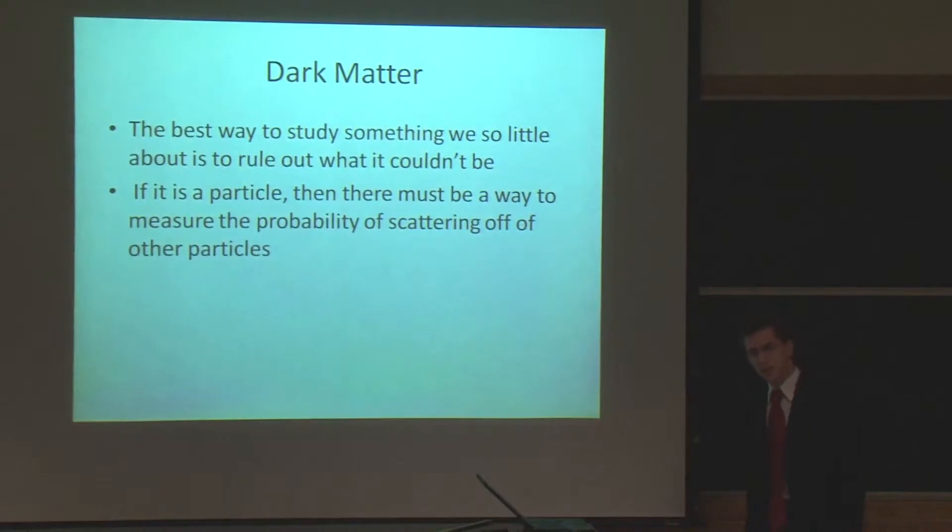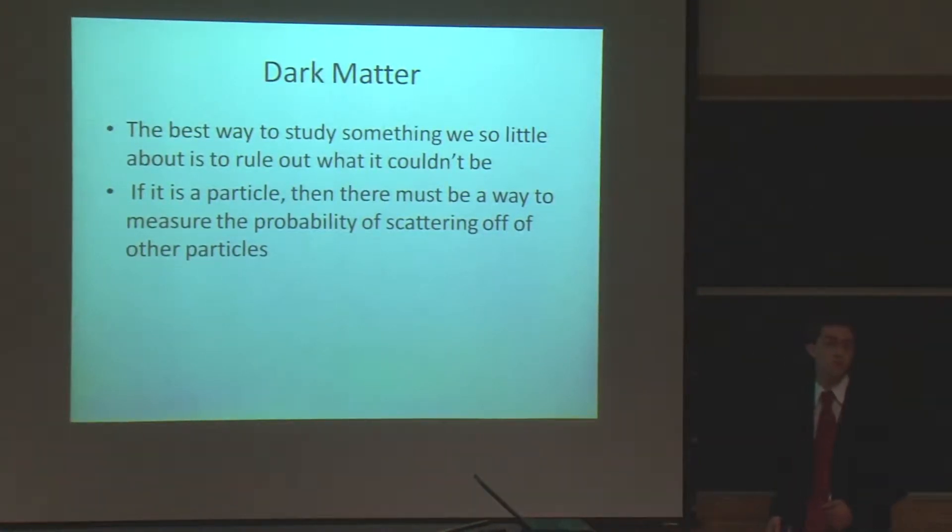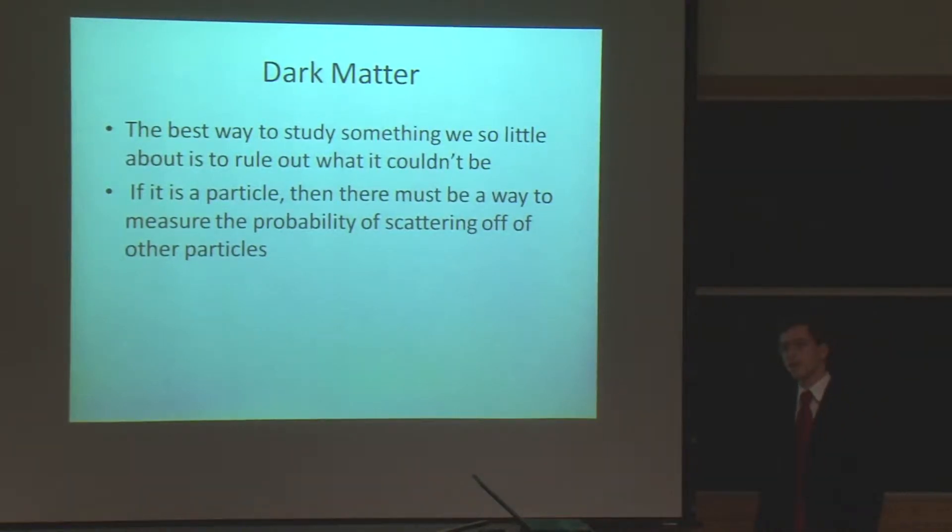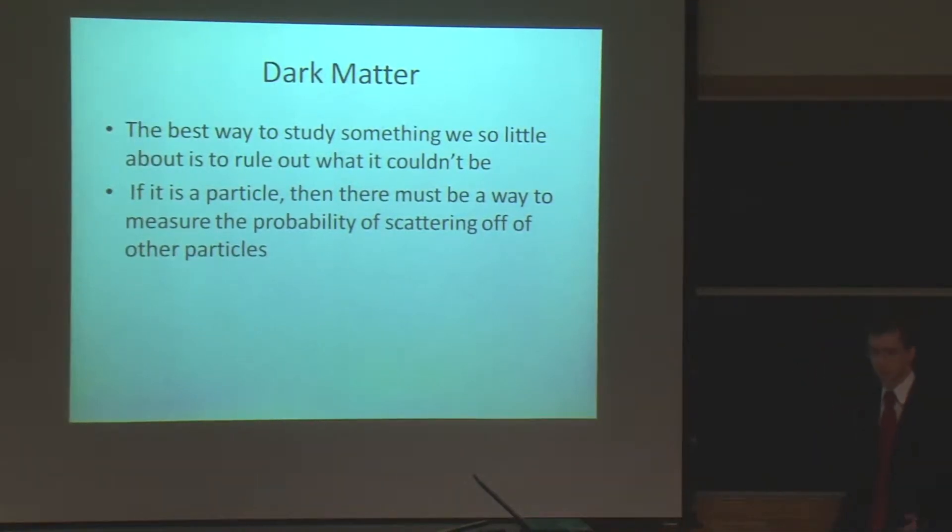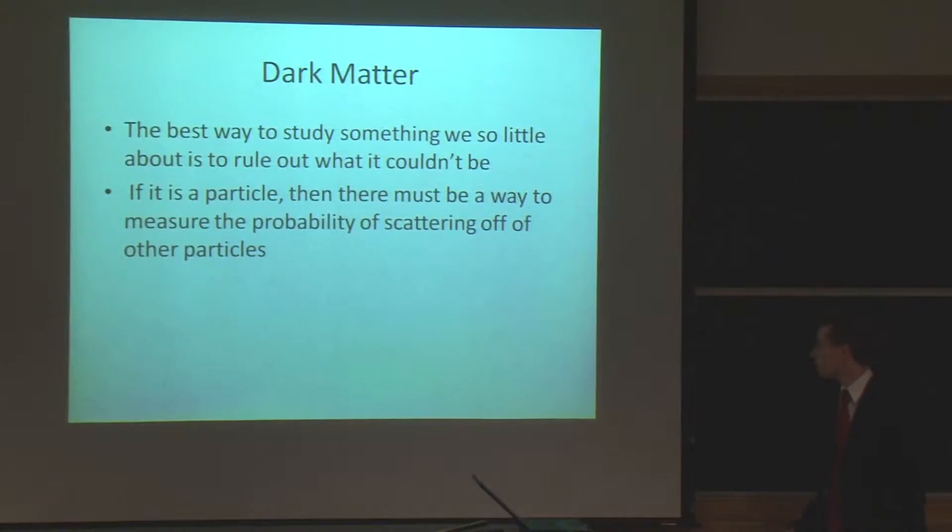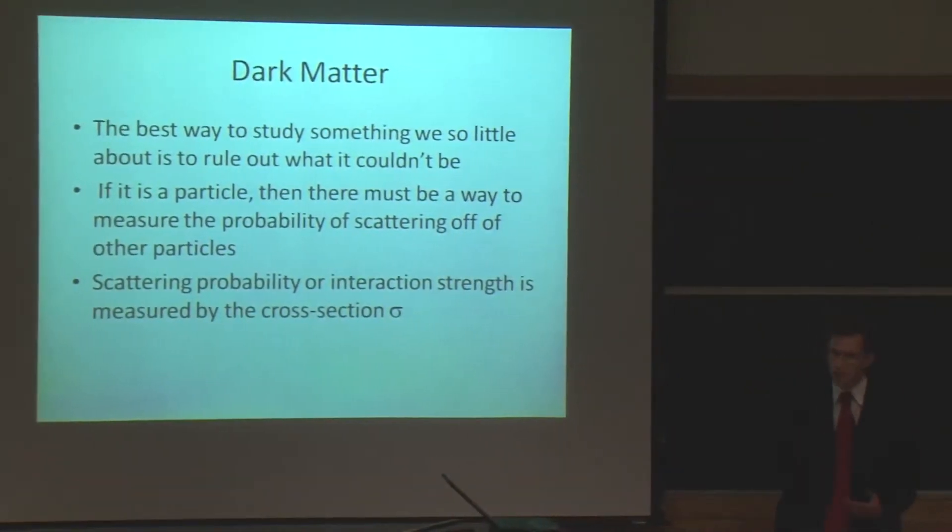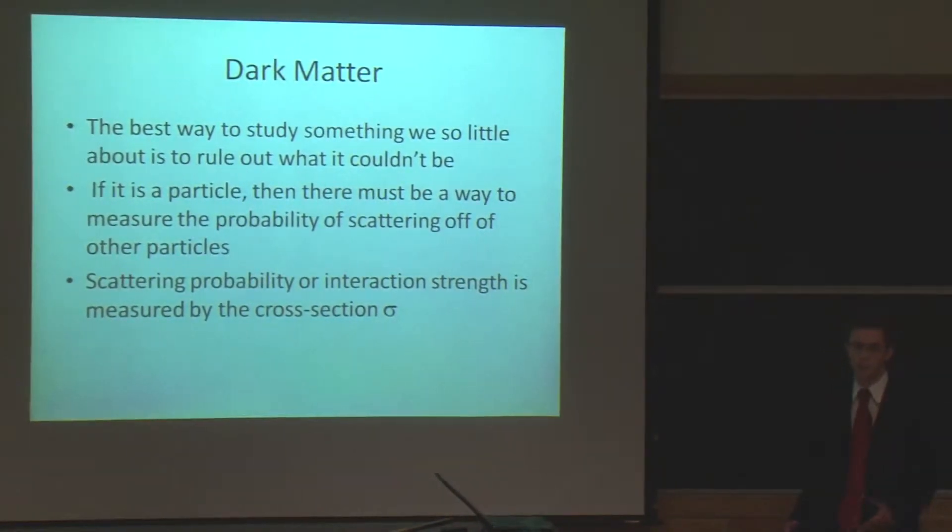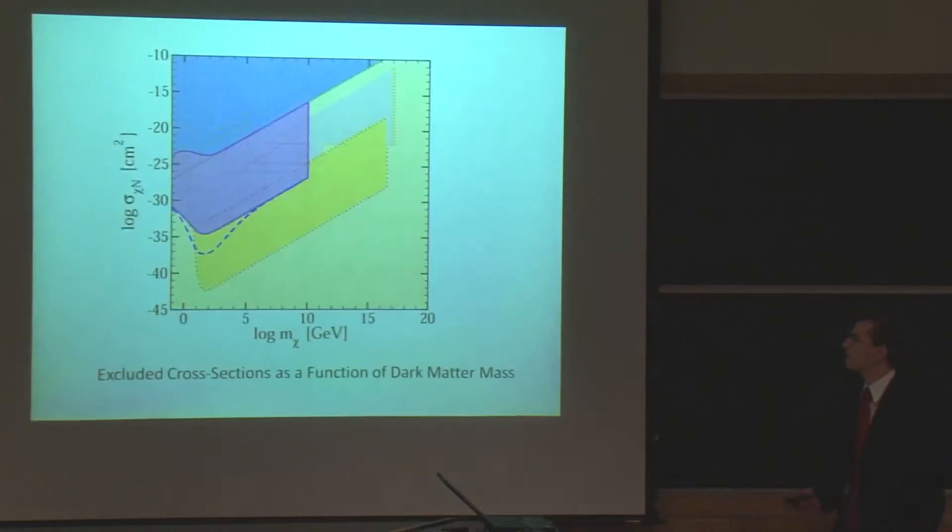But the best way to study something that we know so little about is to rule out what it probably isn't. And the best way to do that is to see what kind of properties could it have that could lead to situations that we don't physically see. The easiest one to do that is to look at a scattering probability. How probably could it scatter off of ordinary matter? Well, the way we measure the probability of scattering is through the cross-section. It's a measure of the target area around something it would have to hit in order for it to lose energy. It's a measure of probability in area units.